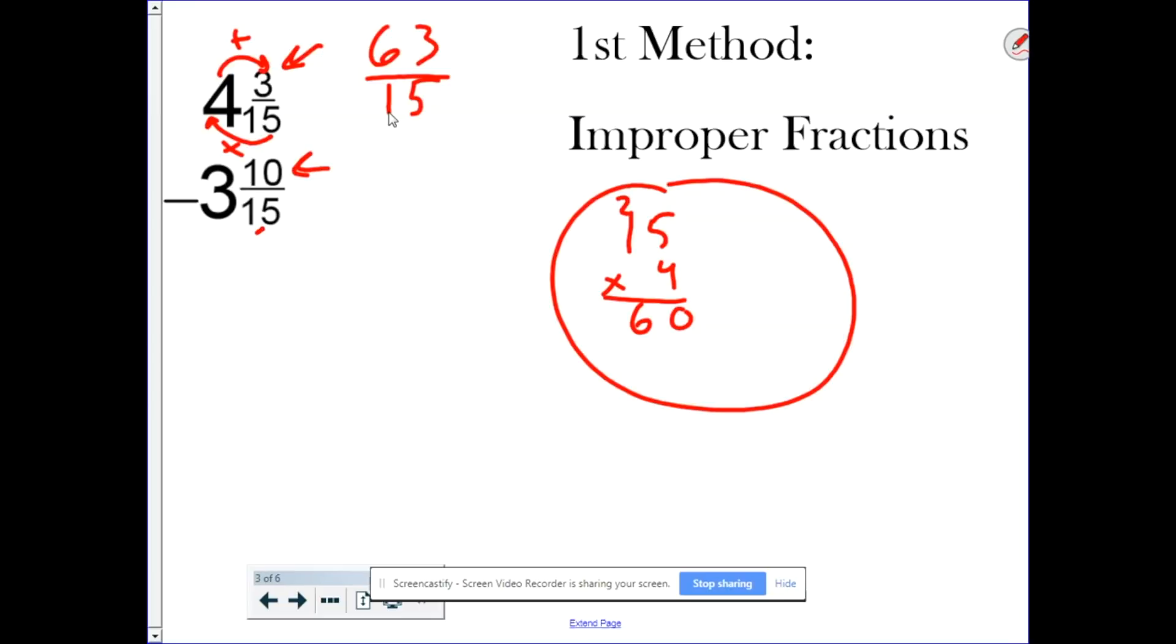All right. Next, 15 times 3 plus 10. 3 times 15 is 45, plus 10 is 55. So 55 15ths. Notice the denominators stay the same. Okay. 63 minus 55 is 8. So our answer is 8 15ths. That's the first method.